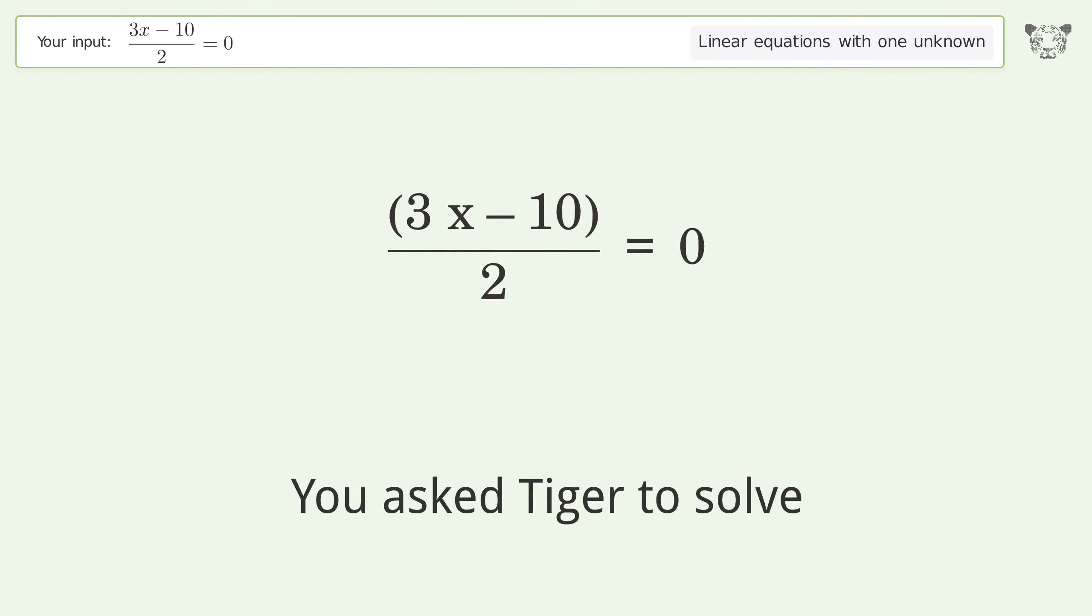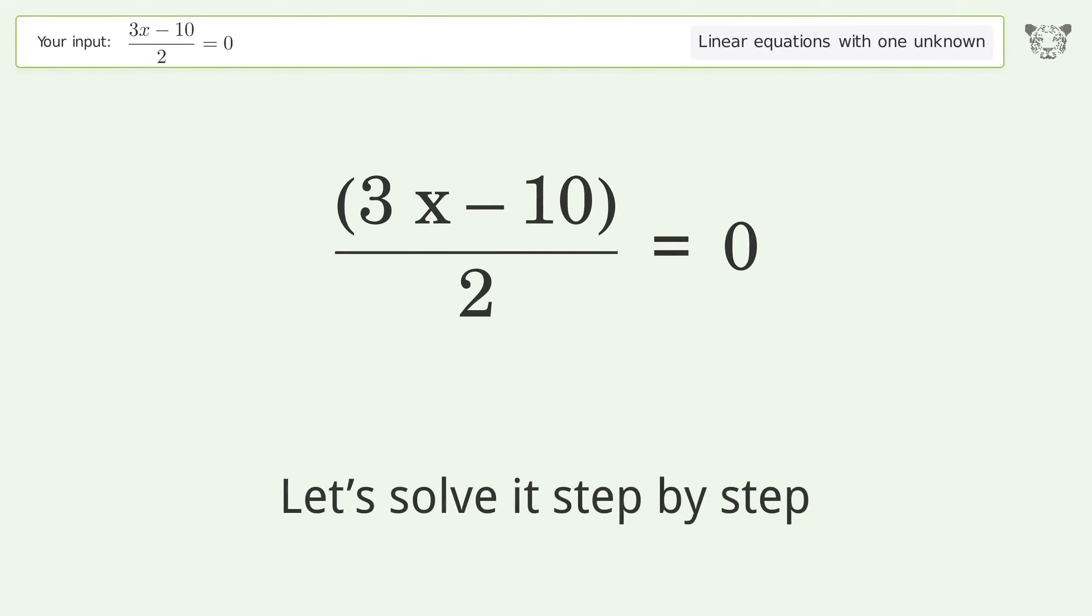You asked Tiger to solve this. It deals with linear equations with one unknown. The final result is x equals 10 over 3. Let's solve it step by step. Simplify the expression.